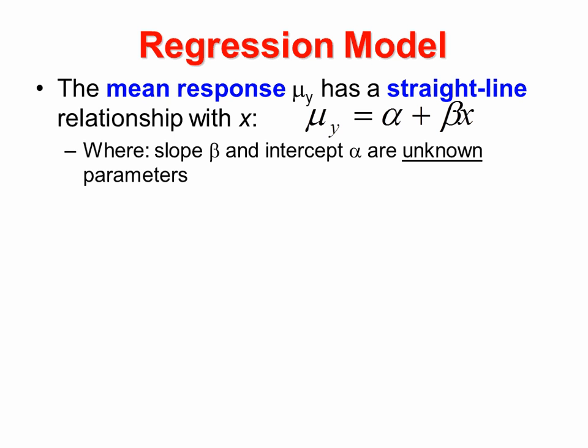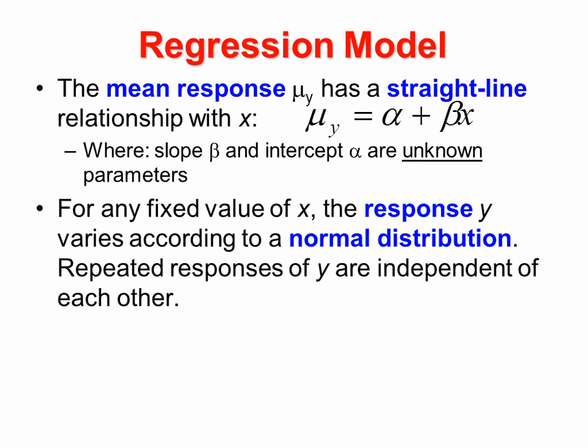Here's more information about this chapter. The mean response variable mu sub y has a straight-line relationship with x, your explanatory variable, so that mu sub y equals alpha, your true intercept, plus beta times x, where beta is your slope. The slope beta and intercept alpha are unknown parameters. And for any fixed value of x — such as 5 feet — the response y varies according to the normal distribution.